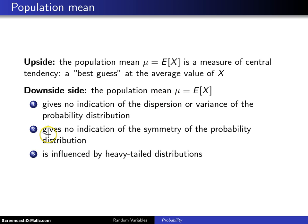The second downside is that the expected value does not give you any indication of the symmetry of the probability distribution — it doesn't tell you if it's symmetric or if it's skewed. We will introduce another expected value known as the skewness, which will be a measure of symmetry.